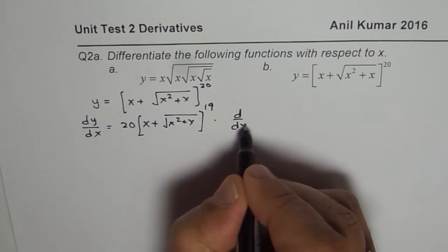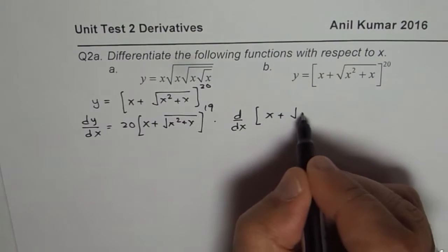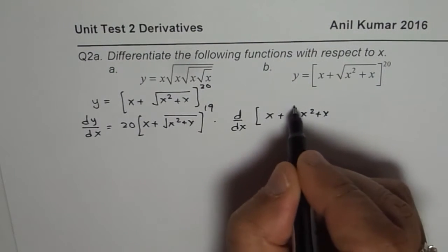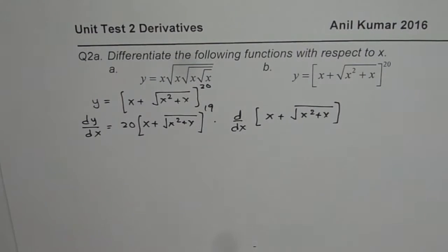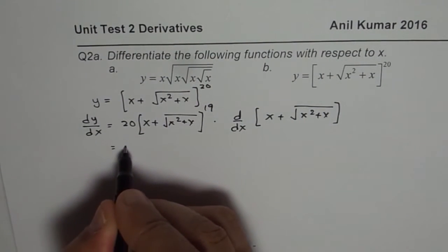So we get d/dx of inside function which is x plus square root of x squared plus x. That is how you can find derivative. And now, this is the chain rule and we will continue with this.